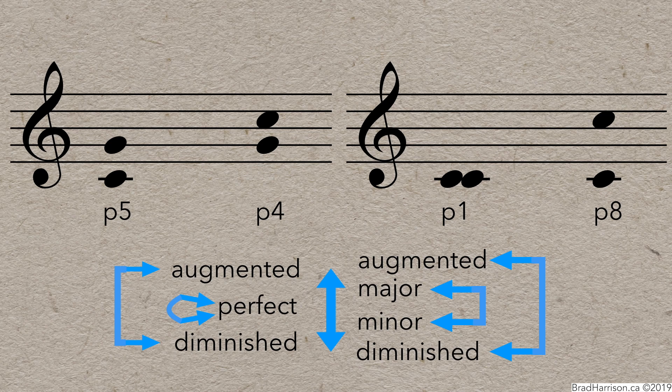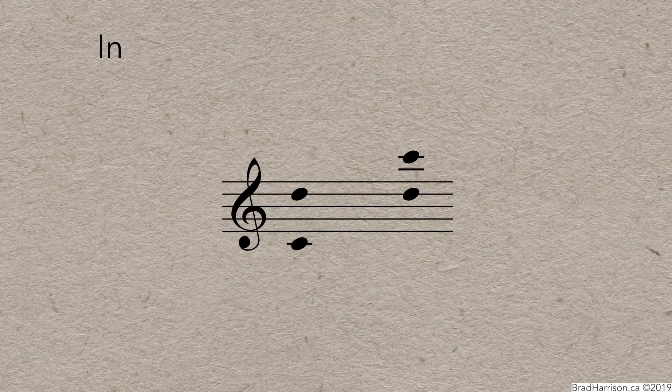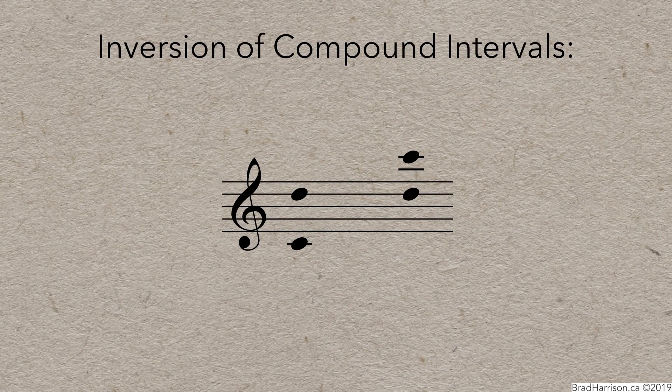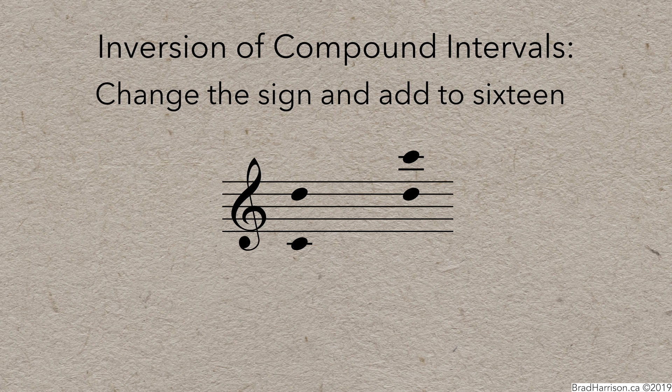Compound intervals can be inverted as well, using essentially the same rules, except, instead of change the sign and add to 9, it's change the sign and add to 16. It doesn't roll off the tongue quite as well, but it still works.